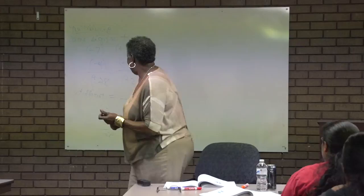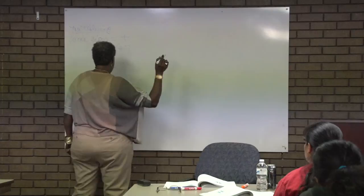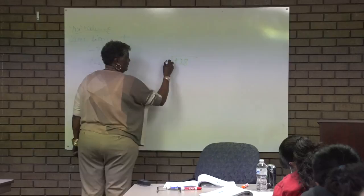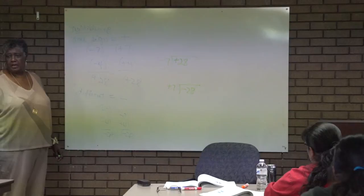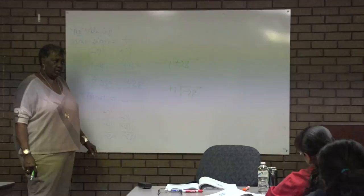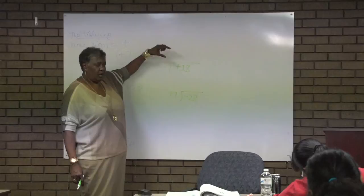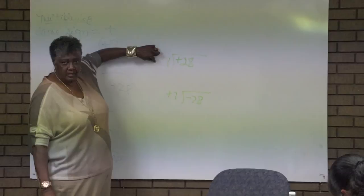When you divide, it's very easy too. Remember, we've talked about the fact that when you divide, the quotient times the divisor has to equal the dividend. So this times this equals what's in the box — what's in the box tells us what the answer has to be.